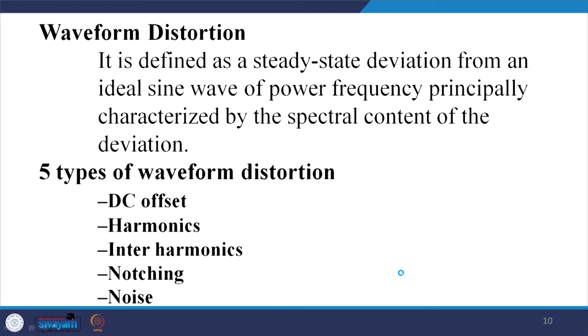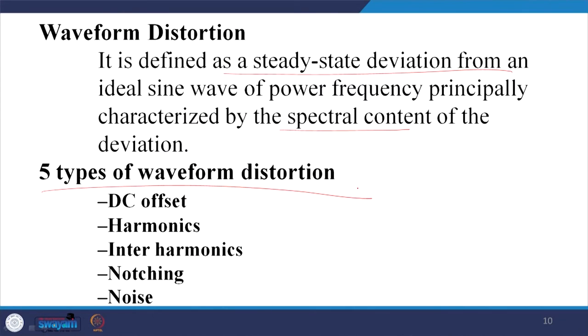Let us define waveform distortion. It is defined as a steady-state variation from an ideal sine wave of power frequency, principally characterized by the spectral content of the deviation. You can perform a spectral analysis to check whether you get only the fundamental. If you get only the fundamental, it is fine; otherwise there are 5 types of waveform distortion.